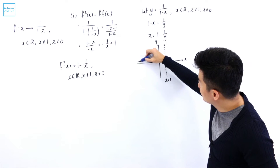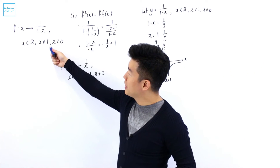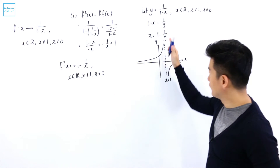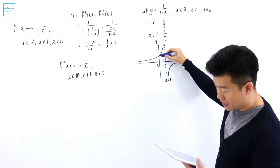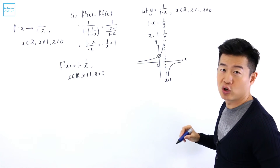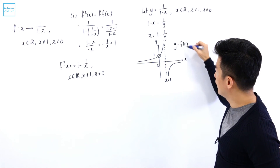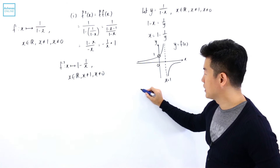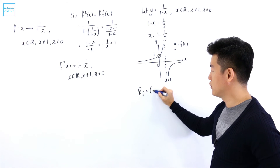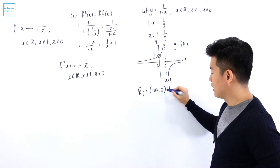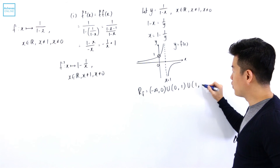If I sketch this on my calculator, there is something tricky: the domain of f(x) is all real numbers except x = 1, but it also cannot assume x = 0. When x = 0, the value is 1, so I use a hollow dot there. Analyzing the graph, the range of f is from minus infinity to 0 (not including 0), union from 0 to 1 (not including 1), then from 1 to infinity.